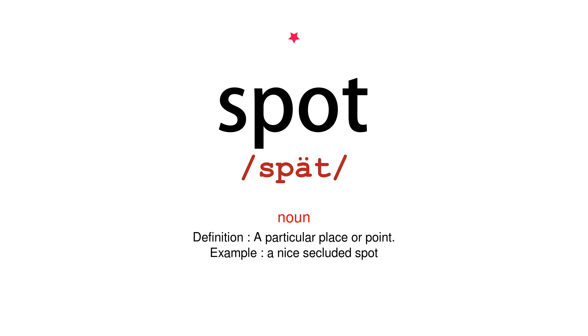Noun Definition – a particular place or point. Example – a nice secluded spot.